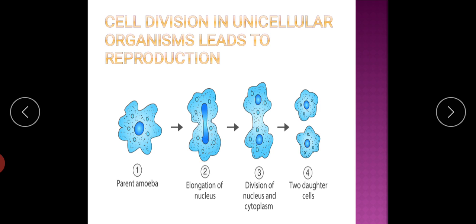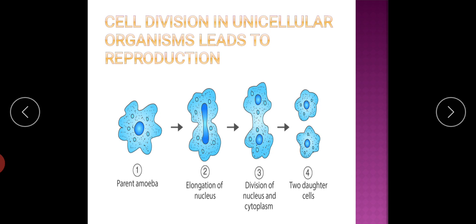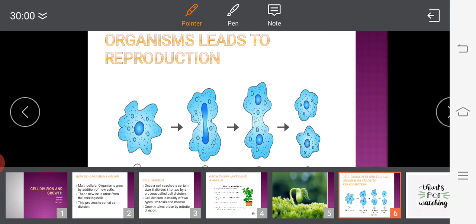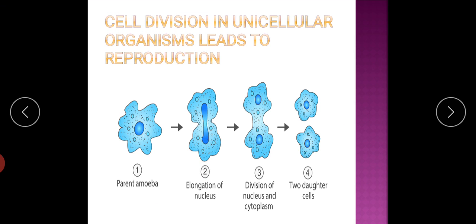The nucleus first divides into two, then the cytoplasm divides and you get two daughter cells, means two new amoeba.